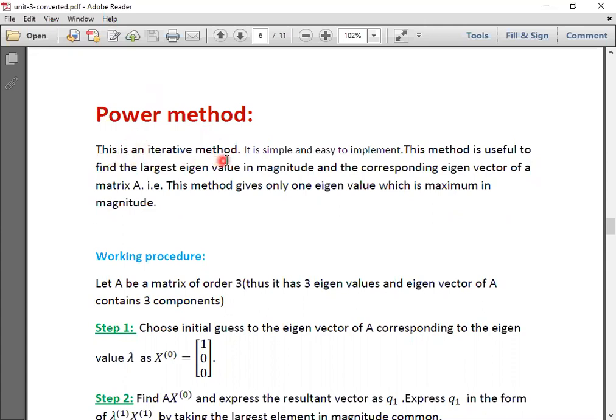This method is an iterative method. It is simple and easy to implement. This method is useful to find the largest eigenvalue in magnitude and its corresponding eigenvector of the given matrix A. That means this method gives only one eigenvalue which is maximum in magnitude. Magnitude in the sense we should consider the absolute value of that eigenvalue. Then that will be the maximum one of given matrix A.